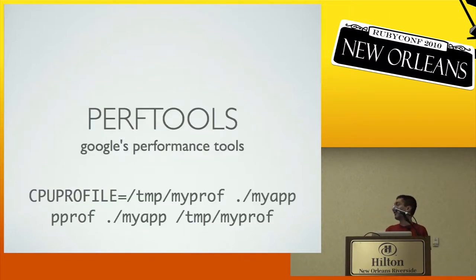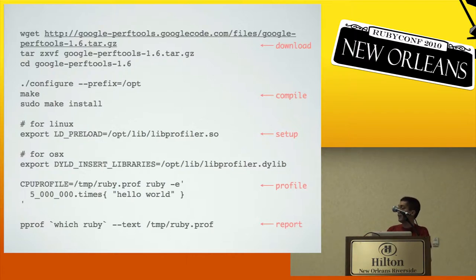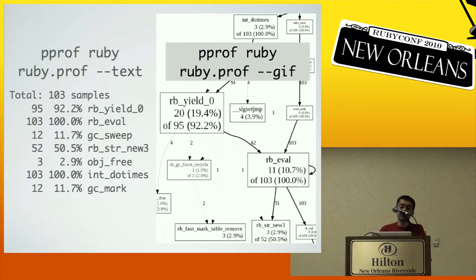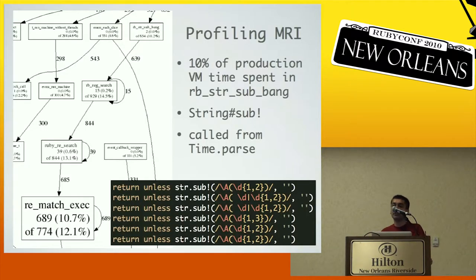The next tool is PerfTools — probably one of my favorite tools. It's a set of tools developed at Google that they use internally for performance work. The one I'm talking about in particular is their CPU profiler. You download, compile, and LD_PRELOAD the library, then set an environment variable before starting your process to write a profile to a specified location. It comes bundled with a Perl script called pprof for analysis. The really nice thing about PerfTools is a built-in graphical output — a call graph where the bigger a function appears, the more CPU cycles it's spending.